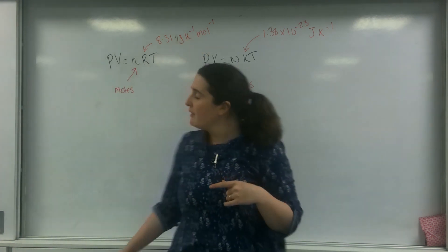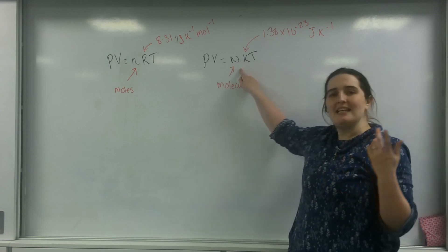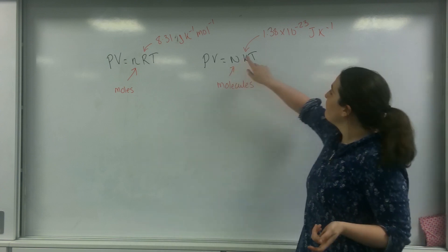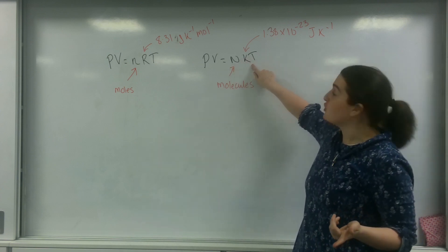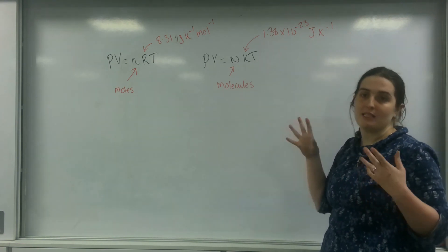This one, PV equals NKT, this big N is the number of molecules and this K is the Boltzmann's constant of 1.38 times 10 to the minus 23.